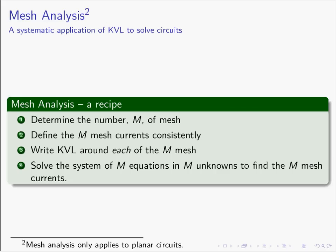To review: mesh analysis is a systematic application of KVL to solve circuits. Step one: find the number of mesh M. Step two: define M mesh currents consistently — all drawn the same direction. Step three: write KVL for each mesh to get M equations and M unknowns. Step four: solve for the M mesh currents, then find any current, voltage, or power. Remember, mesh analysis only applies to planar circuits — if the circuit cannot be drawn flat on paper, mesh analysis does not work. When in doubt, use nodal analysis, because nodal always works. Thanks for visiting — we'll do more mesh analysis next time with more complicated circuits.